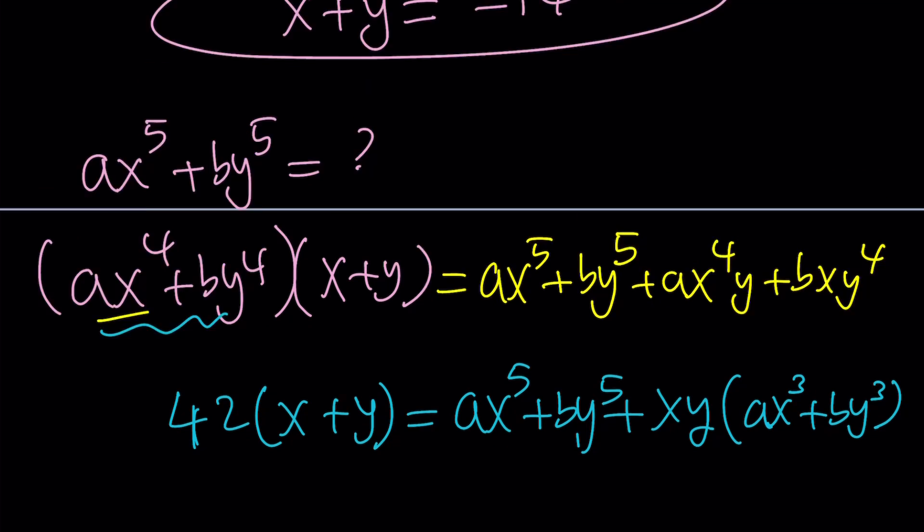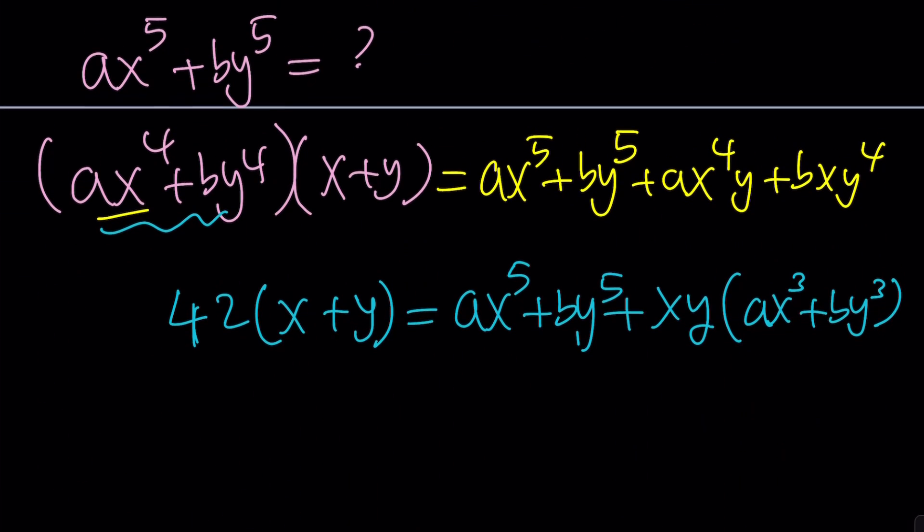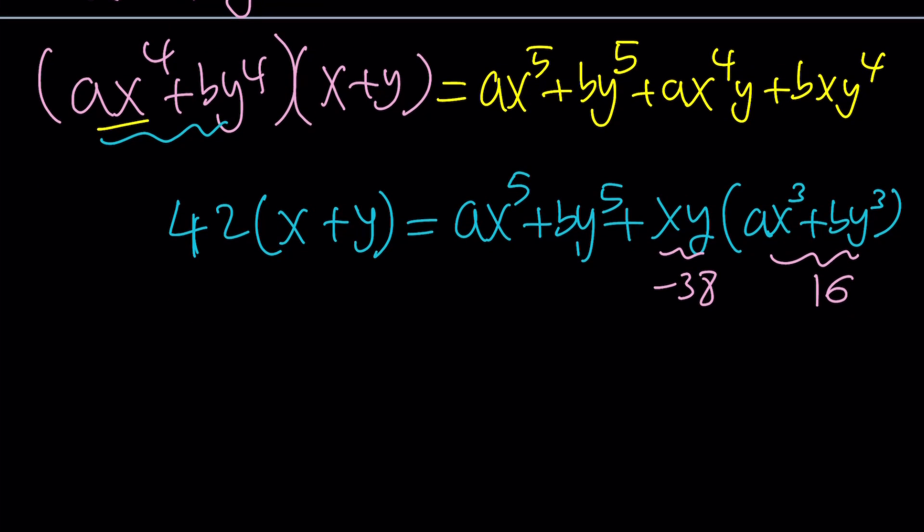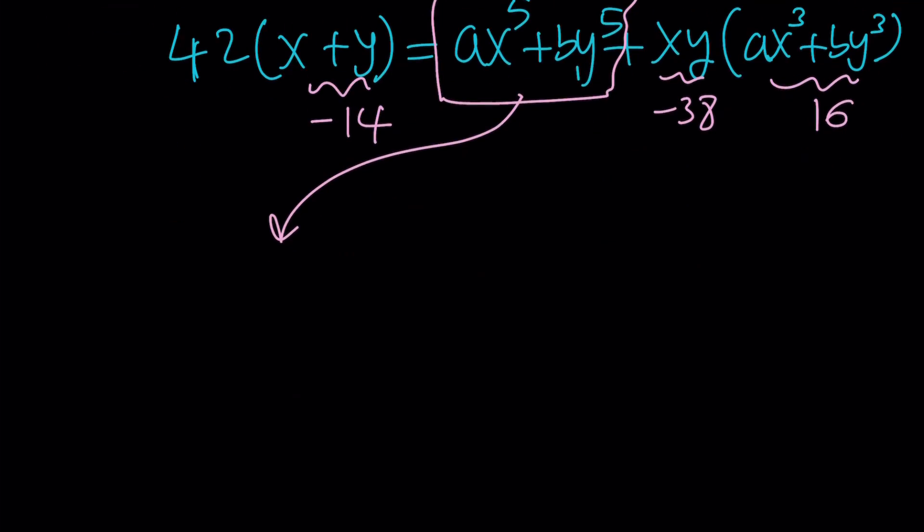And here, we can take out an xy and ax cubed plus by cubed is going to appear again. Now, we do know xy is equal to negative 38. Nice. This is negative 38. We do know this because it was given. Remember, that was equation number 3, the very first group. And then, x plus y is also known. Right? What is x plus y? It's negative 14. Remember that? And if you do the math, you're going to get the value of ax to the 5th plus by to the 5th from here. So, the answer is going to be 0 to 0.